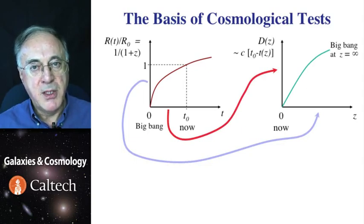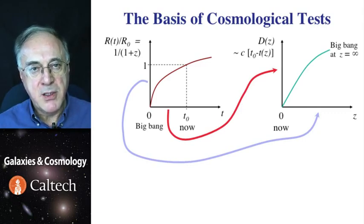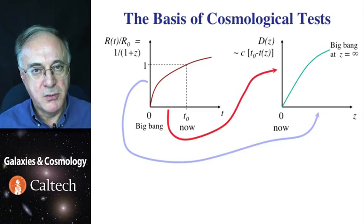And distances, in principle, we can measure. So we flip this diagram, and instead of expansion factor, R of T, we use the redshift, which is an observable quantity. And instead of the time, we use a distance, which we can figure out how to measure in some way.